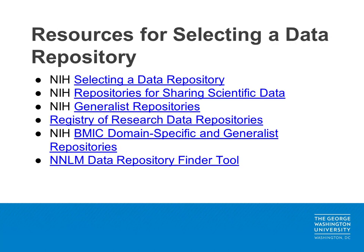Fortunately, there are a number of resources that can help researchers select a data repository. The NIH Selecting a Data Repository resource provides an excellent overview of various options. NIH also maintains resources related to selecting a NIH domain-specific or generalist repository. The Registry of Research Data Repositories, or RE3 Data, allows researchers to look for discipline-specific repositories, and the NIH BMIC group also maintains domain-specific and generalist repository resources.